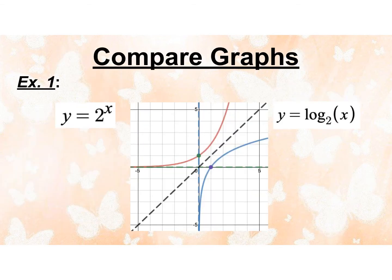Here's a neater graph. The red one is my exponential, and the blue is my logarithm. The black dotted line has a y-intercept of 0 and a slope of 1, so that is the equation y equals x — the diagonal line. Anything that's an inverse is going to be reflected over that line, so these two graphs are inverses of each other.